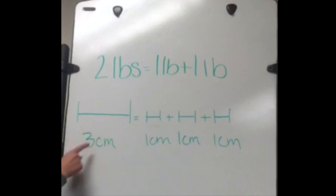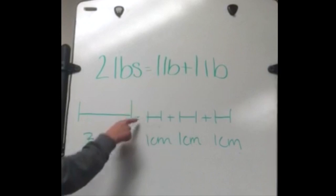In this example, 2 pounds equals 1 pound plus 1 pound. And in this example, 3 centimeters equals 1 centimeter plus 1 centimeter plus 1 centimeter. And these equal signs just mean that this is equivalent to this.